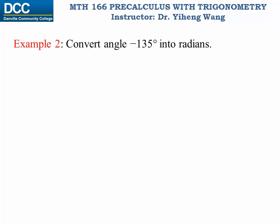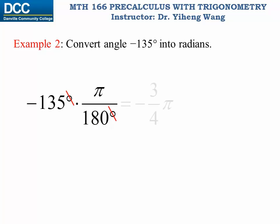Let's look at this example: we need to convert negative 135 degrees into radians. Since we want to get rid of the degree unit, we multiply this angle by the coefficient π over 180 degrees. Using this conversion coefficient, degrees appear on the denominator, so we can cancel out the two degrees. Then we do the calculation, and the result is negative 3/4 π. As I said, if you can express the angle as a multiple of π, do not approximate it. You can leave it as −3π/4, or include the unit 'rad' if you wish.